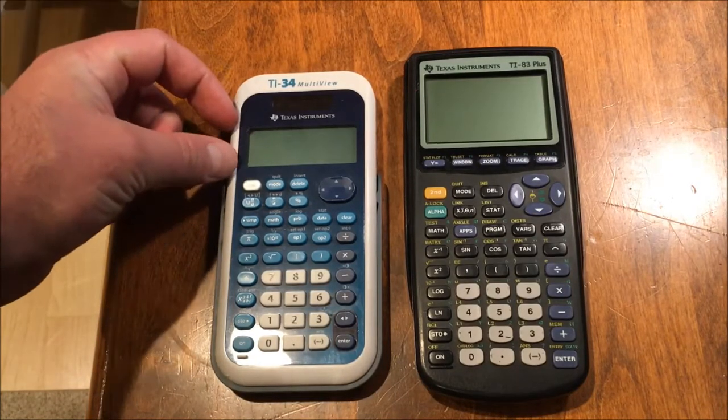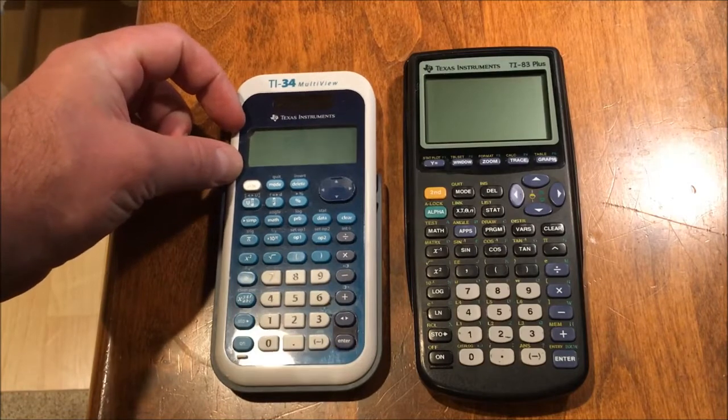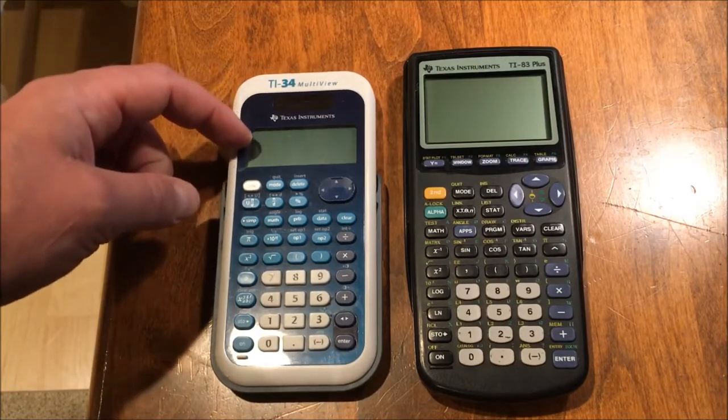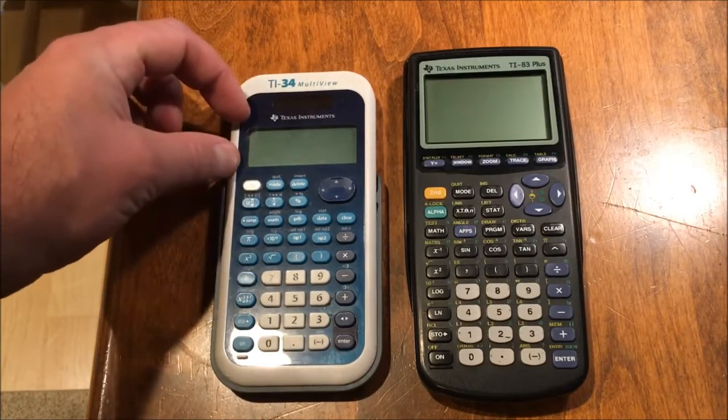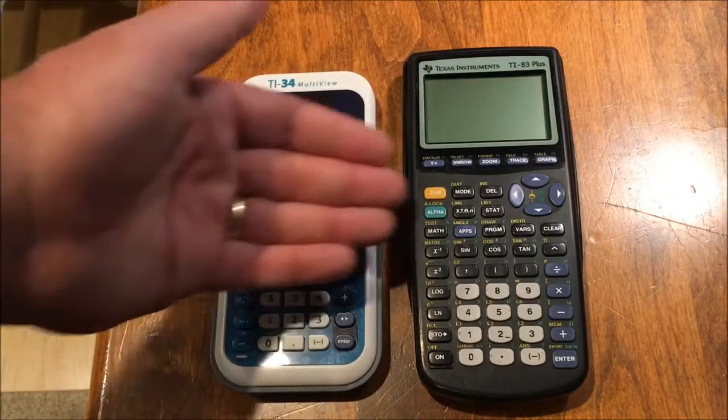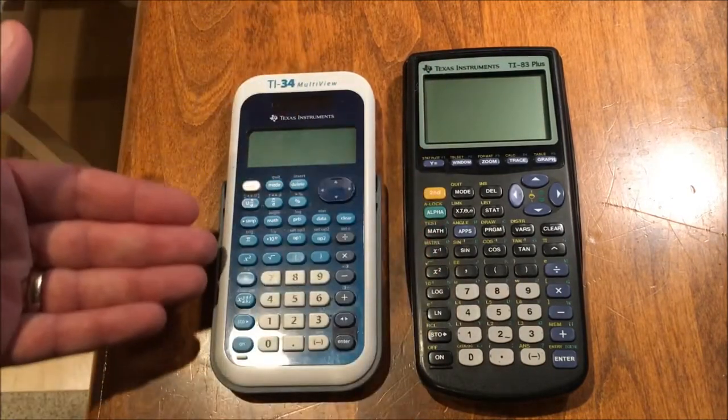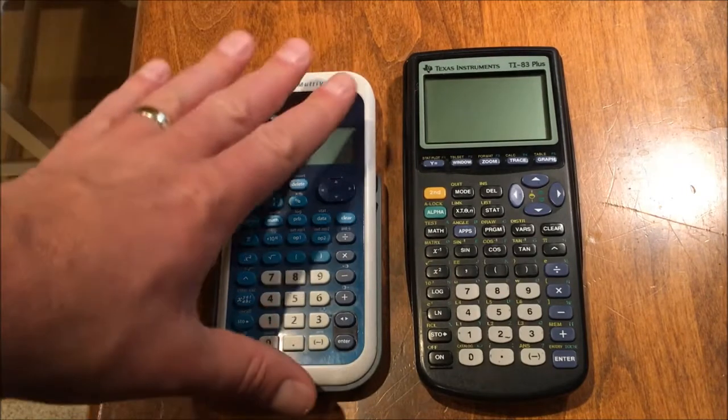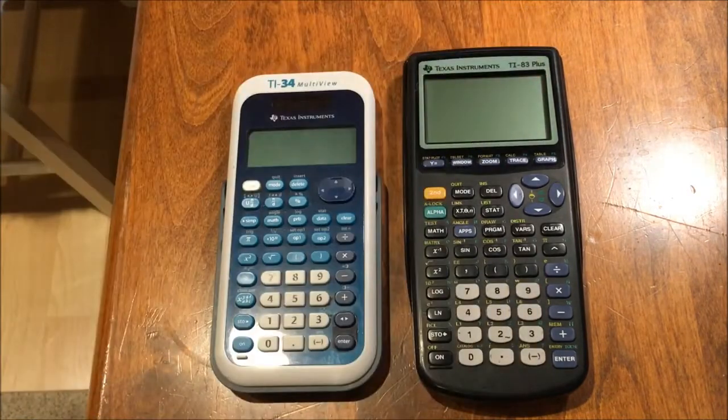This is an example of your standard scientific calculator. Notice the screen difference. This does not graph. It has multi-level views of expressions, but it does not graph. This one can fit a graph. It also has many more features than the multi-view does. So as you move from here to here, notice you're going to get a lot more functionality out of a graphing calculator.